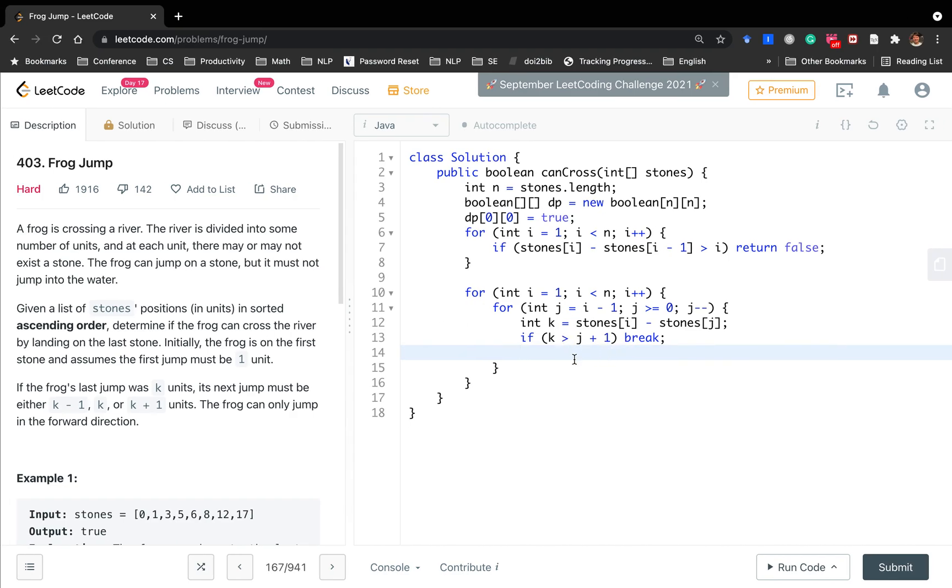So this is how you understand it. And then dp[i][k] equal to dp[j][k-1] or dp[j][k] or dp[j][k+1]. Okay, I think if i equal to n minus 1, if you find it, then dp[i][k] equal to true, then just return true. Return true. In the end, return false. We cannot reach it.